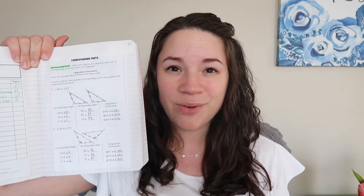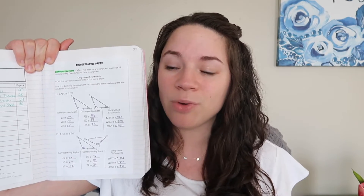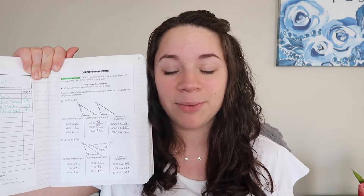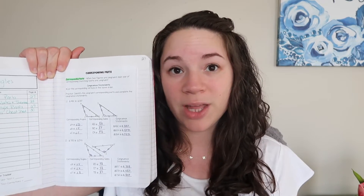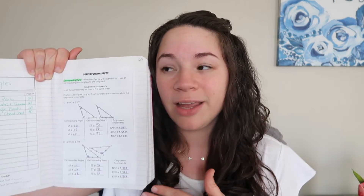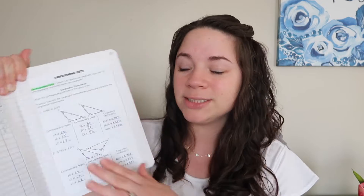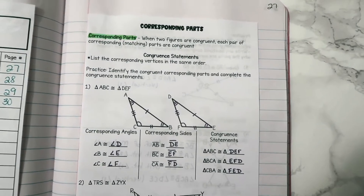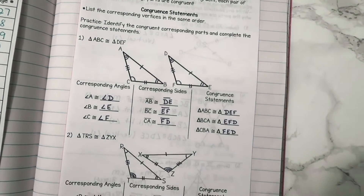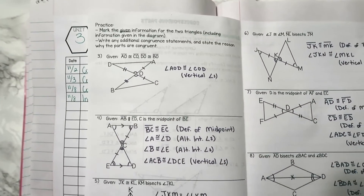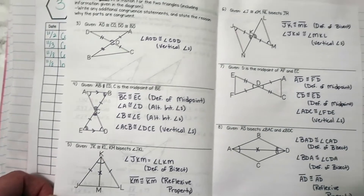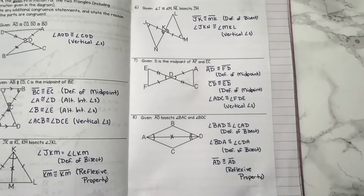As far as grading goes, I tell my students if they have the vertices in the wrong order, as long as they've identified the line segment or angle correctly, I'm not going to take points off — but I do show them the proper way to do it so that when they're reading questions it helps them answer correctly. We go over the corresponding parts and then there's a booklet page where I give them some different triangles and given information, and they have to mark up the diagram.